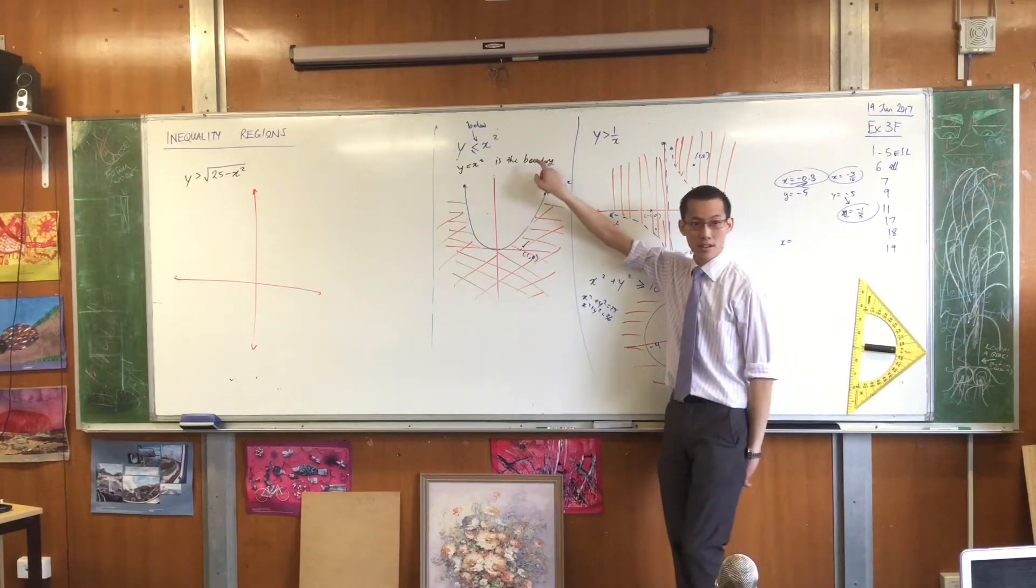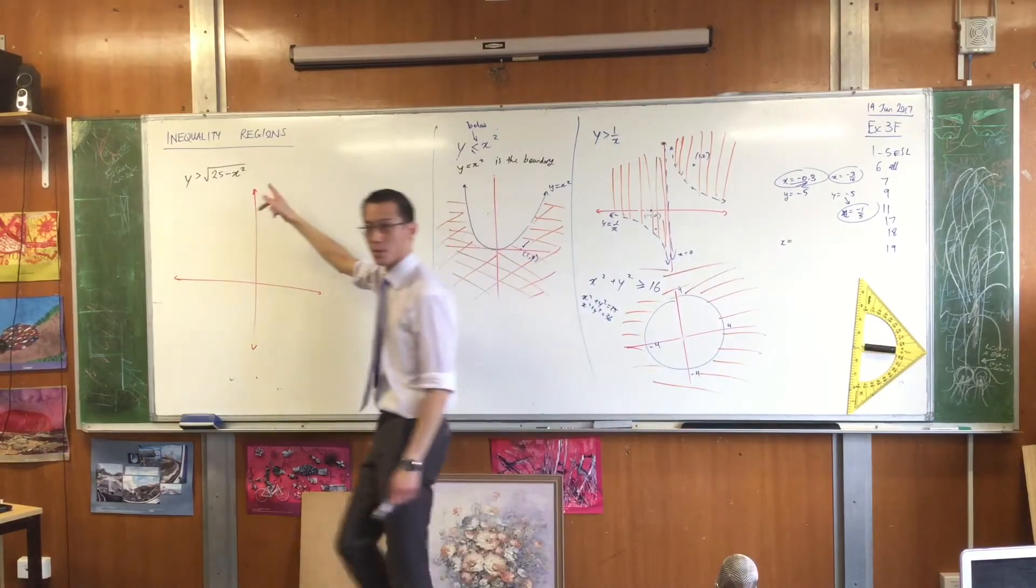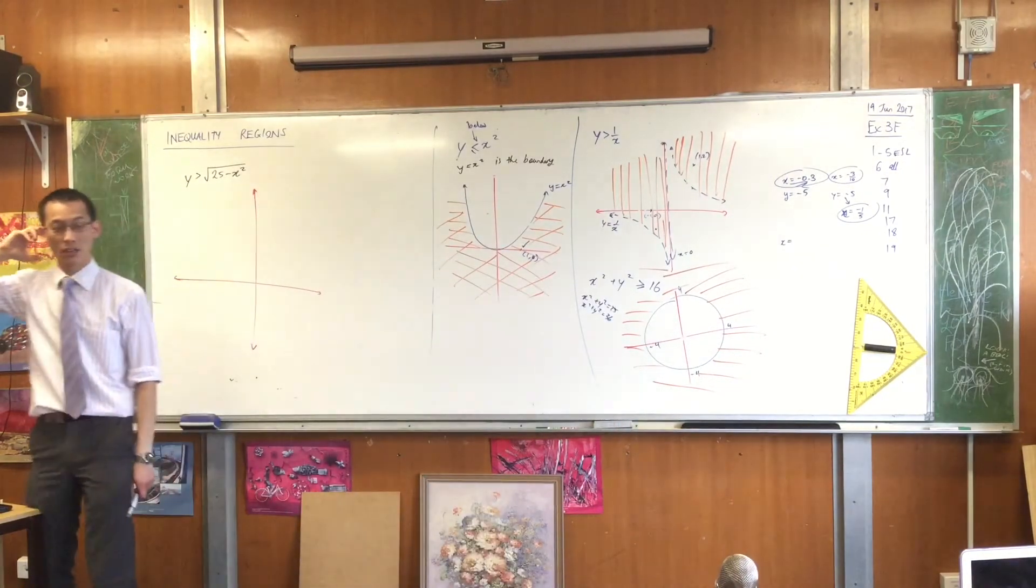Firstly, we think about the boundary, right? Where is the boundary? So have a look at this guy. Do you recognize what this shape is going to be if I change the inequality for an equal sign?